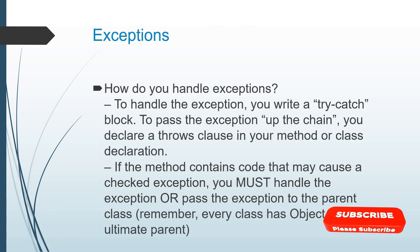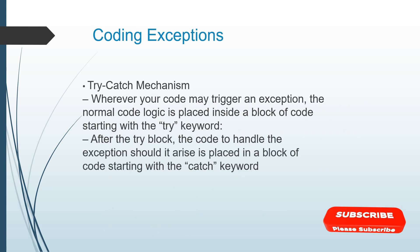How do you handle exceptions? To handle exceptions, you write a try-catch block. Even for automation testers, when you write a method, do write it in a try-catch block — it will help you catch exceptions easily and that is also best practice. To pass exceptions up the chain, you declare the throws clause in your method or class declaration. If the method contains code that may cause a checked exception, you must handle the exception or pass it to the parent class. Remember, every class has Object as its ultimate parent class.